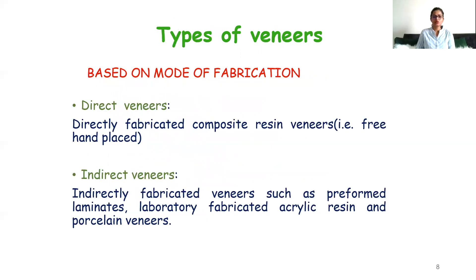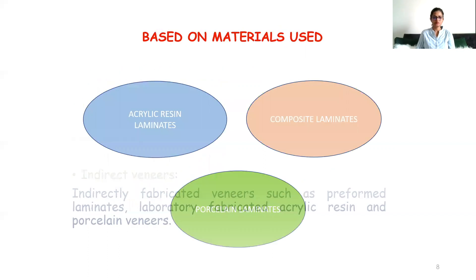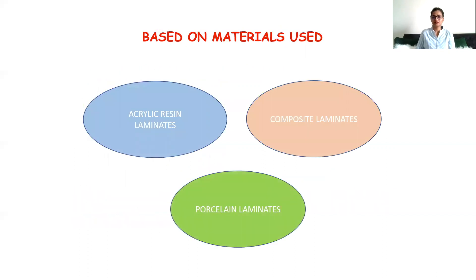Coming on to the types of veneers: based on the mode of fabrication, they are divided into direct veneers and indirect veneers. Direct veneers are basically composite resin veneers fabricated directly on the tooth. Indirect veneers are preformed laminates or porcelain laminate veneers. Based on the material used, they are divided into acrylic resin laminate, composite laminates, and porcelain laminates.